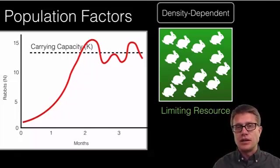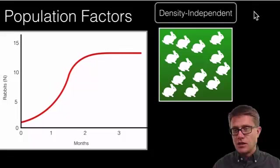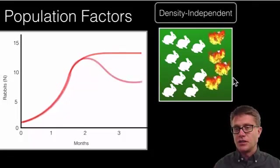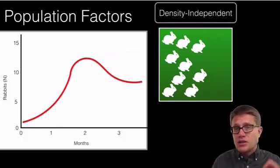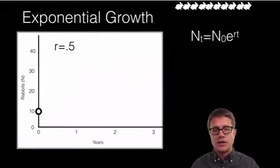These are density dependent factors because they're based on the density of the population. We can also have density independent. Imagine these rabbits over on this side are killed in a forest fire. That's just chance. It's not based on the density of rabbits that we have.